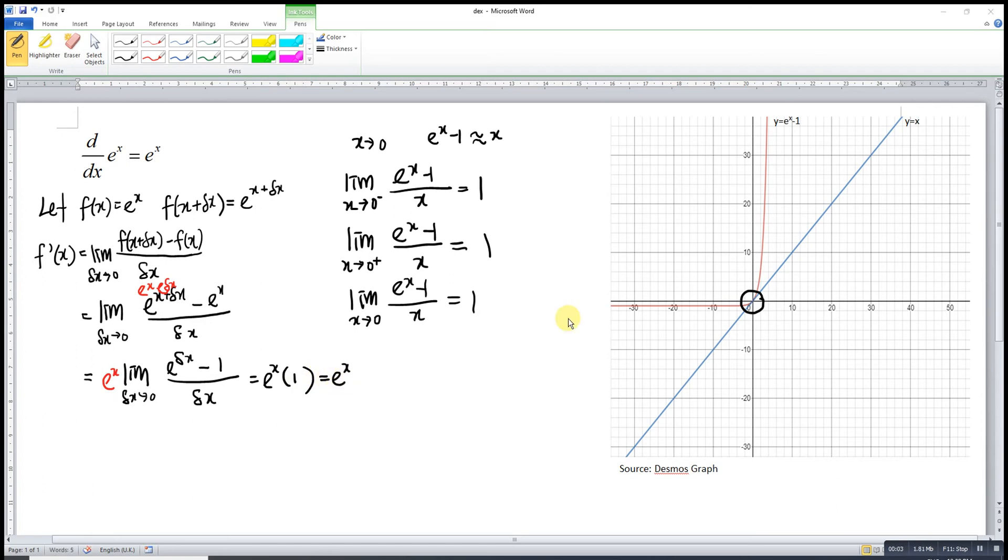If we don't want to use the graph to prove this limit, then we just rewrite the equation. We let h be the numerator part. So e^(delta x) minus 1.